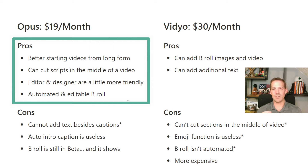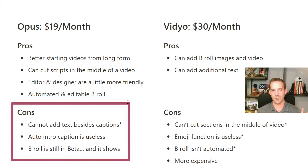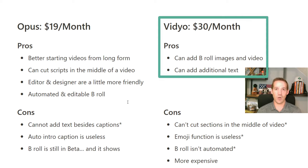Now that we've seen both tools, let's talk pros and cons from a real estate content creator perspective. For Opus Clip: it's cheaper than Vidyo, which is great for realtors who already have a ton of tools to pay for. It also seems to do a better job of creating short-form videos from long-form content. You can cut scripts in the middle of a video — so if there's a sentence in a 60-second clip you don't want, you can remove it. With Vidyo it's start to finish only, you can't change the middle.